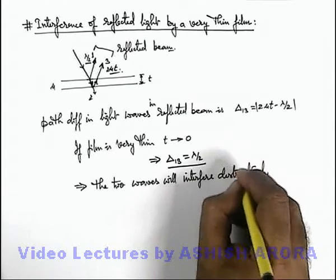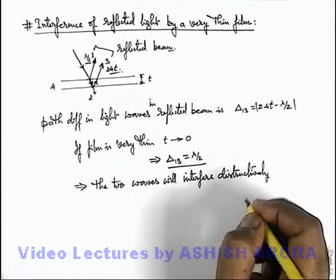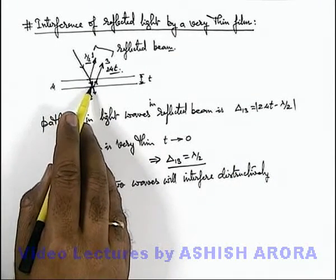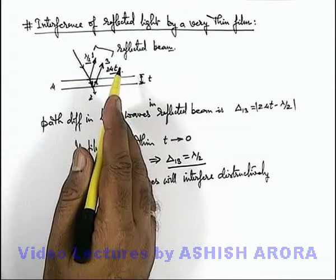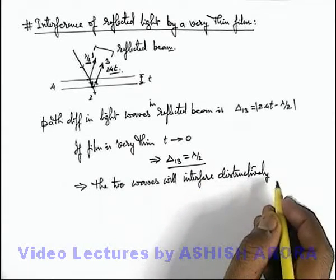If the film is very thin, then the reflected beam will have very low or negligible intensity. When the two waves interfere destructively...